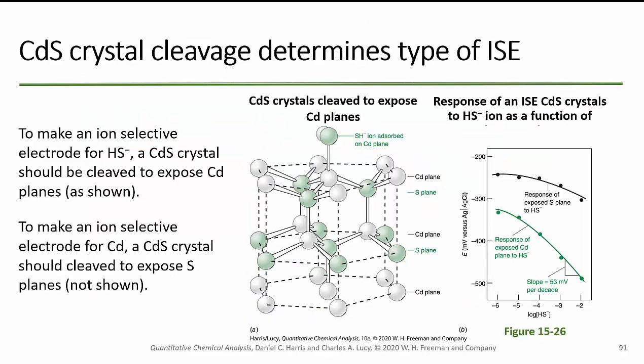Sometimes just changing the cleavage plane on a crystal can change the response type. To make an ion selective electrode for hydrogen sulfide — which is what they put into natural gas to make it smell bad — you take a cadmium sulfide crystal and cleave it to expose the cadmium planes. If you want to make an ion selective electrode for cadmium, you take that same crystal and expose the sulfide planes. Just depending on how you slice it, you get different responses, with a negative slope where increasing concentration gives an increasingly negative voltage relative to the silver–silver chloride reference electrode.